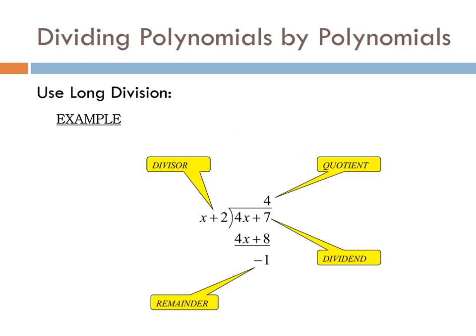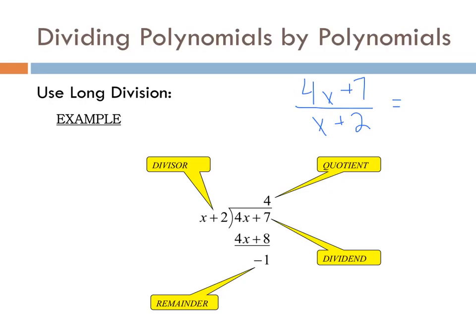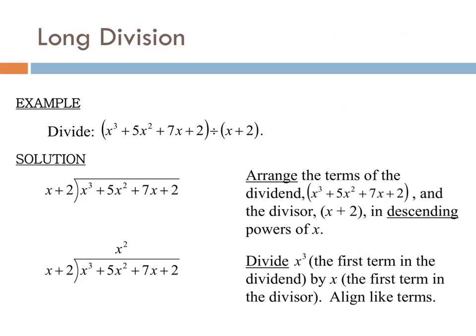Here are terms you need to know. The quotient is the answer on top. The remainder is what's left at the bottom. The divisor is the thing we're dividing by — for example, x plus 2 in the problem (4x plus 7) over (x plus 2). The dividend is the numerator, the thing being divided.